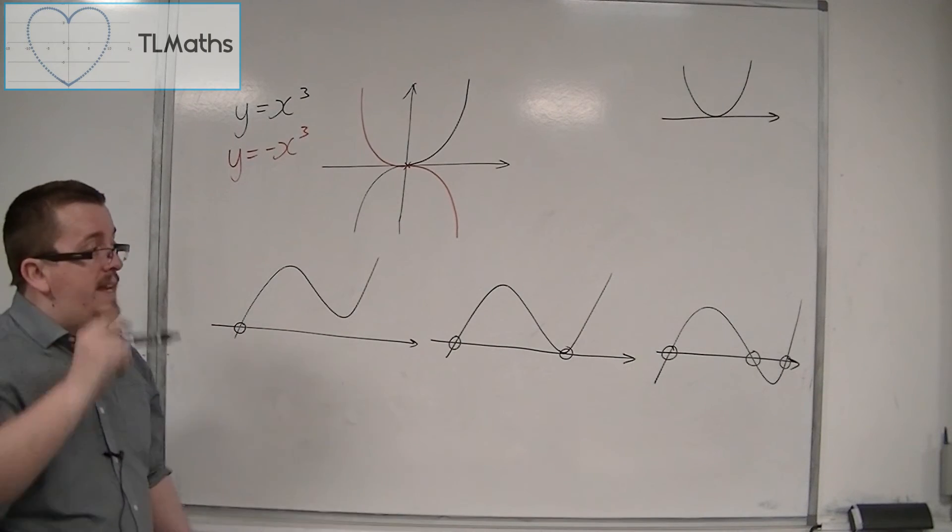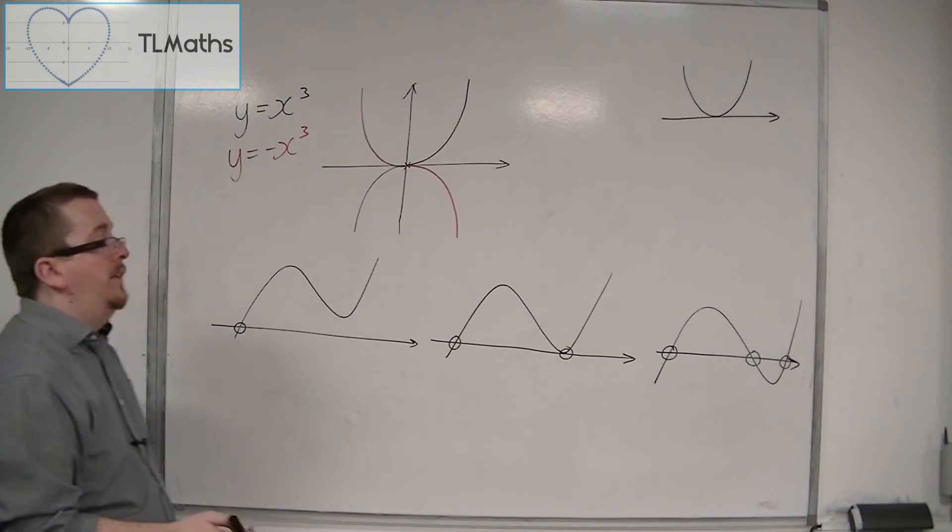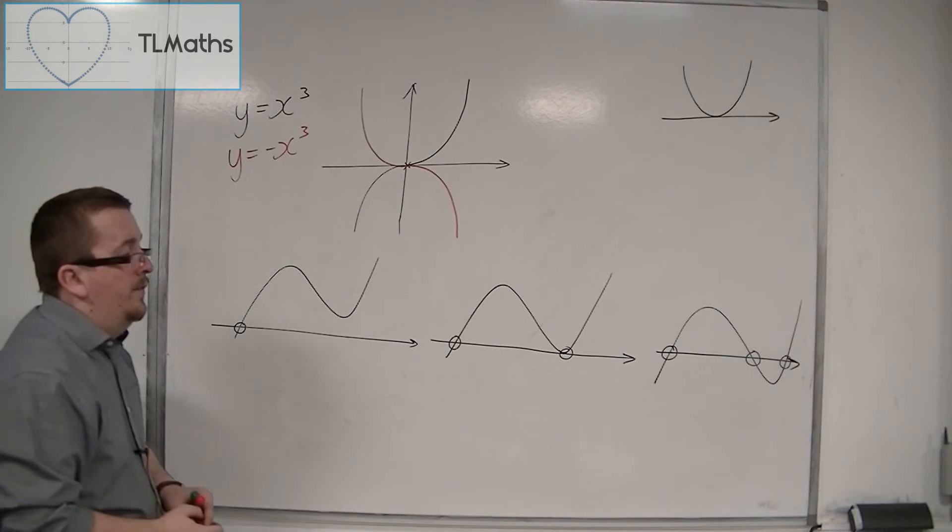Or, we could have three distinct real solutions. So three distinct intersection points with the x-axis, depending on the shape of the curve.